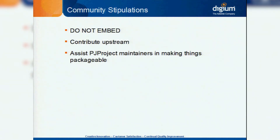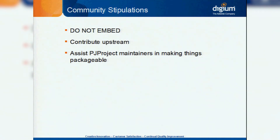We presented the idea of using PJSIP to the Asterisk community, and most people were fine with it, but those with the most trepidation were people involved with packaging Asterisk. They told us they hated that in Asterisk 11, we had embedded PJ project into the source because it made it essentially unpackageable. So they said: if you're going to use PJSIP in a larger capacity, do not embed PJ project — use a separate library instead. Also, don't fork PJ project with your own custom changes; contribute upstream so everyone benefits. Third, they said PJ project is not currently packaged by Debian, Red Hat, or any of those, so they wanted us to work with the PJ project maintainers to get it packageable. I'm pleased to mention we did all these things.